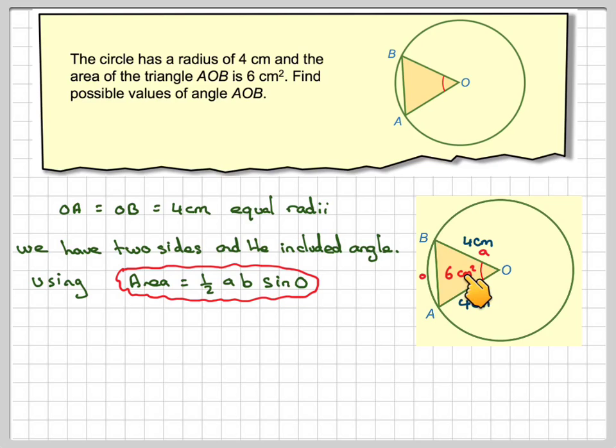But we've got that the area is equal to 6, so we can write down that 6 is going to be equal to a half times 4 times 4 times the sine of AOB.